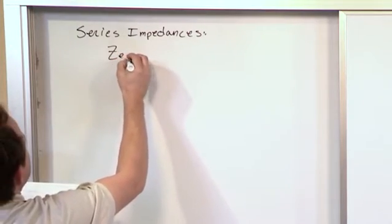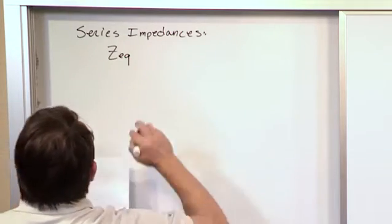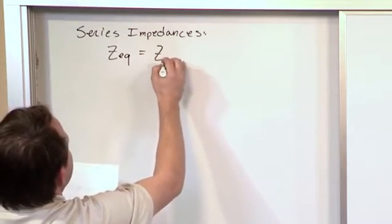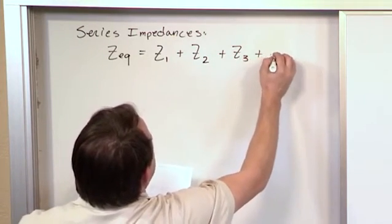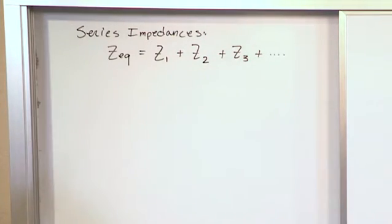then the equivalent impedance of the whole thing is basically going to be the impedance of the first device plus the impedance of the second device plus the impedance of the third, and so on, however many you have in series.